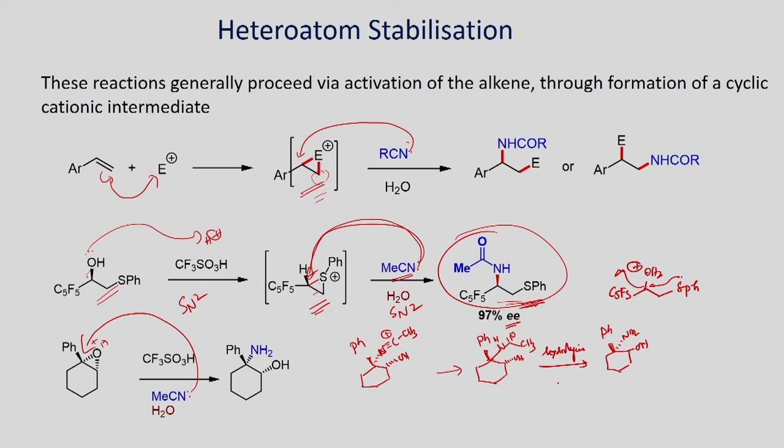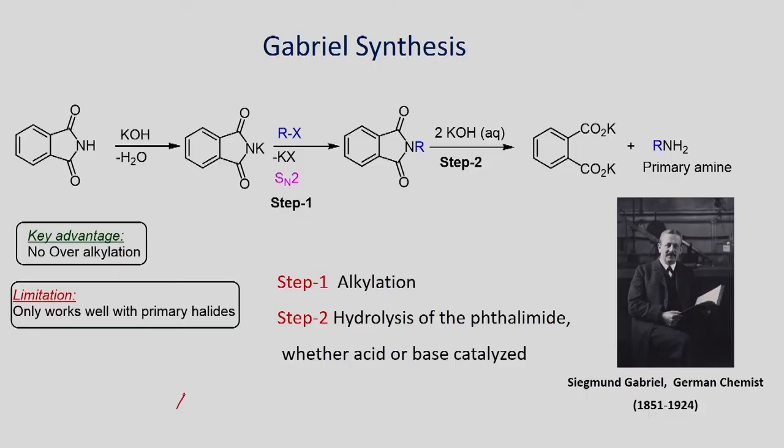So far we have seen how to convert alkenes and alcohols into corresponding amides, and also how epoxides can be opened with nitrile in the presence of acid to give amino alcohol as the product. Now let us look at amination of alkyl halides. If you want to make a primary amine, one of the efficient approaches is Gabriel synthesis.